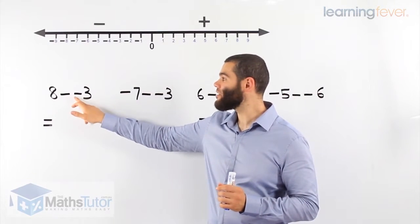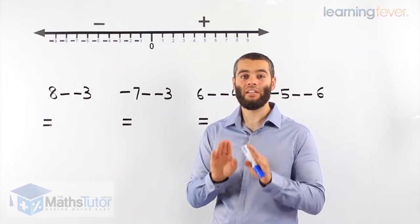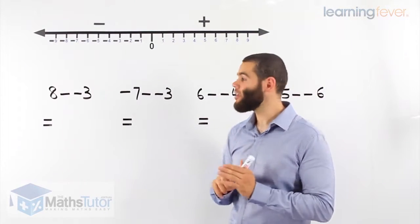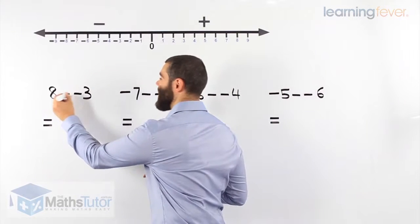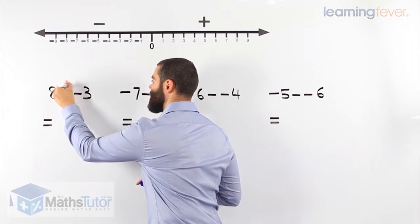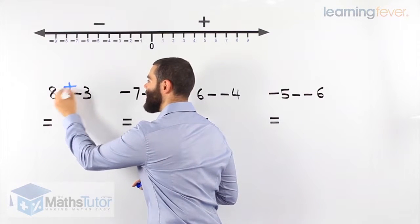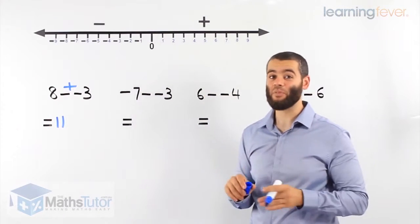We have 8 minus negative 3. The rule is, when we have two negatives sitting side by side, they join forces and become a plus. So 8 minus negative 3 becomes a plus. 8 plus 3, our answer is 11. It's that simple.